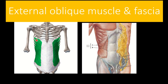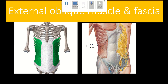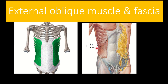Among the three important muscles, first is the external oblique muscle and fascia. We can see the green colored muscle — it is the external oblique muscle. It arises from the ribs and runs to the lower part of the abdomen, running from the lateral part to the medial side. Close to the midline it converts into a fibrous structure — the fascia of the external oblique muscle.